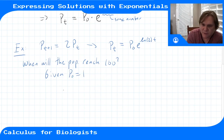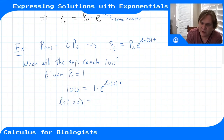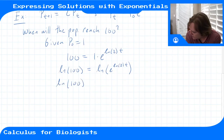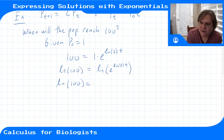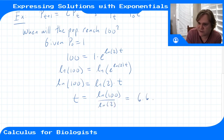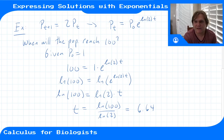To answer that, we have 100 = 1 times e to the ln(2) times t. We take the logarithm of both sides: ln(100) = ln(e to the ln(2)·t). The natural log cancels with the exponential, leaving ln(100) = ln(2) times t. Solving for t, we divide both sides by ln(2): t = ln(100) / ln(2), which gives us approximately 6.64.